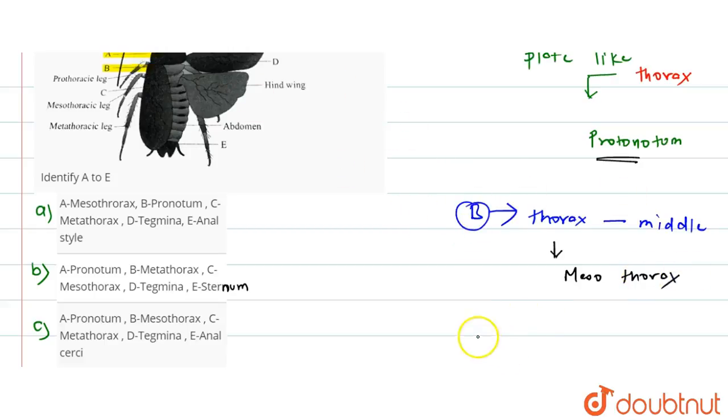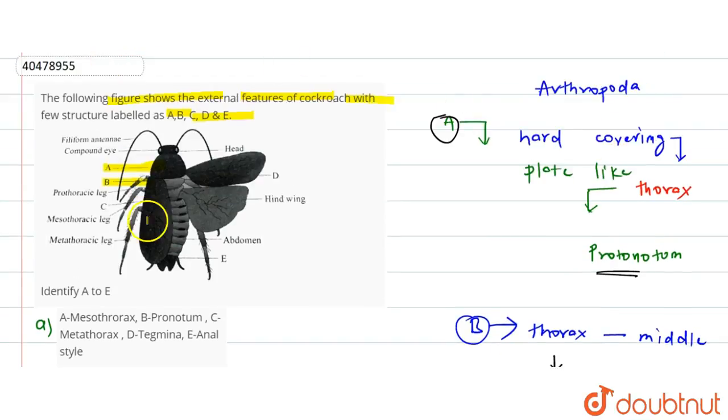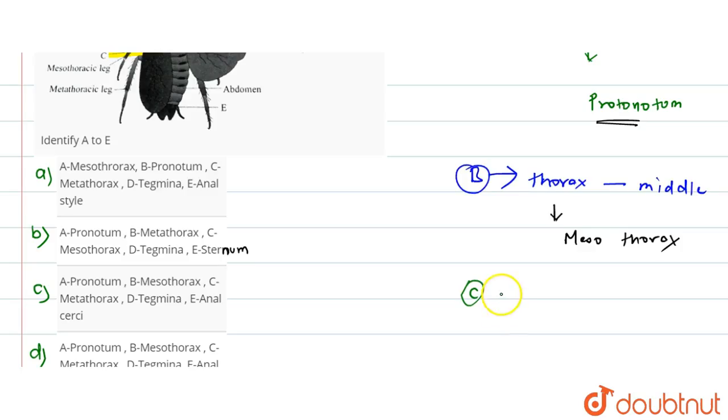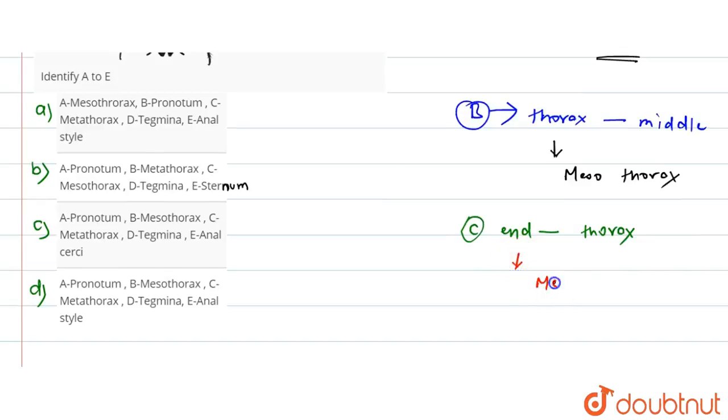Third labeling, that is C, which we have given here. Here is the part of thorax.